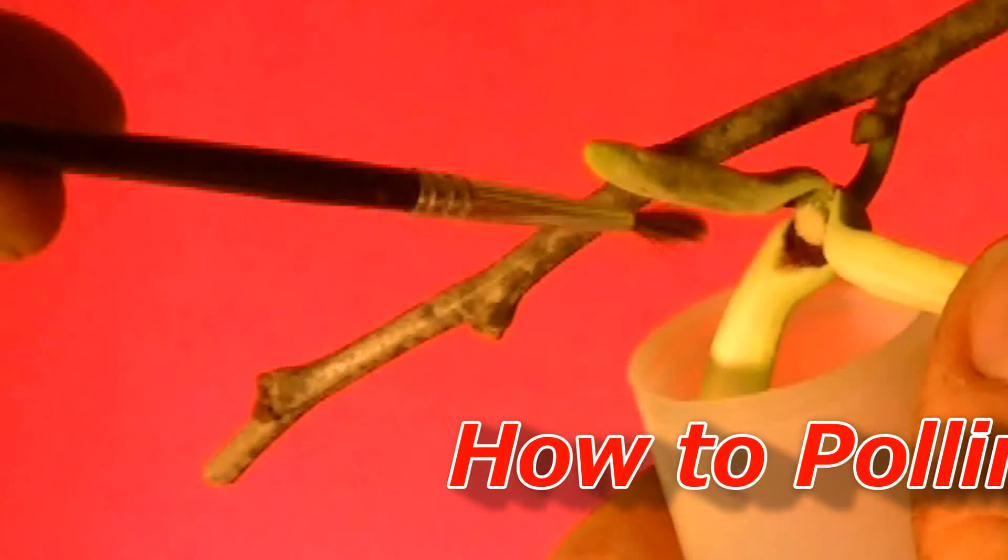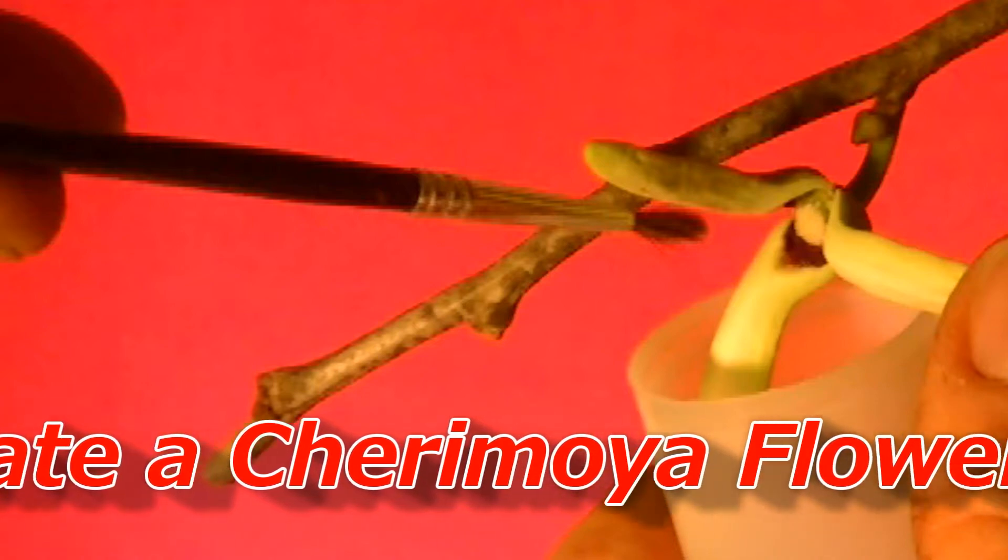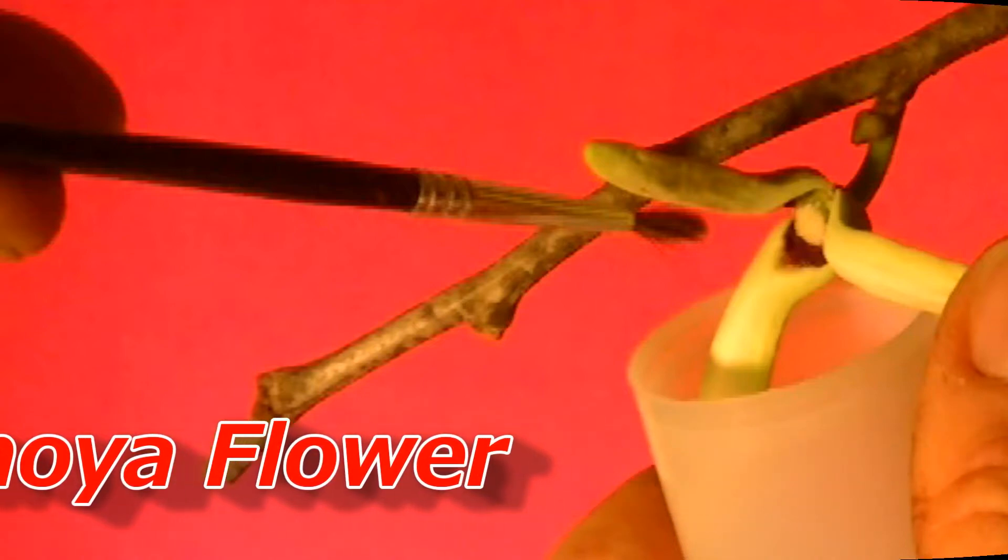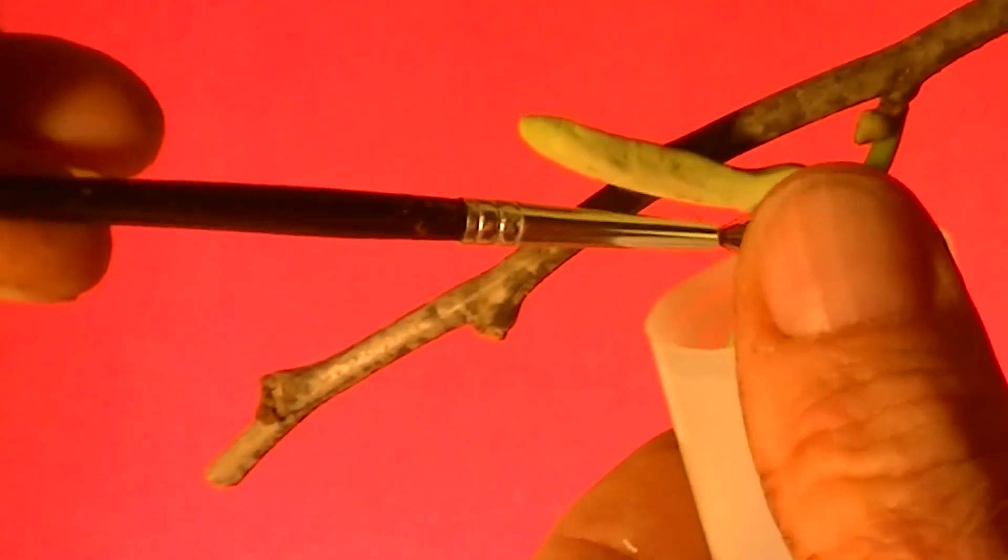Gather the cherimoya pollen from a well-opened flower. An old film tube and a paintbrush work well. Just twiddle it around, catch it with the film tube.